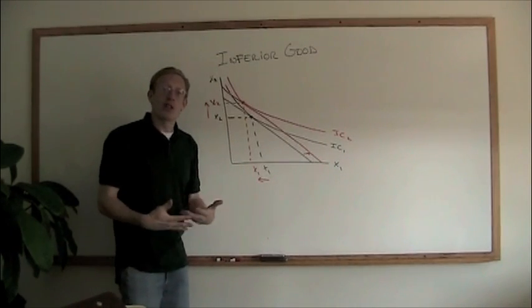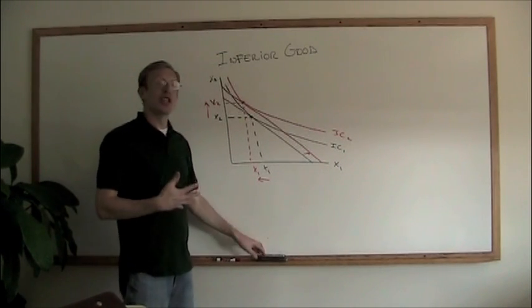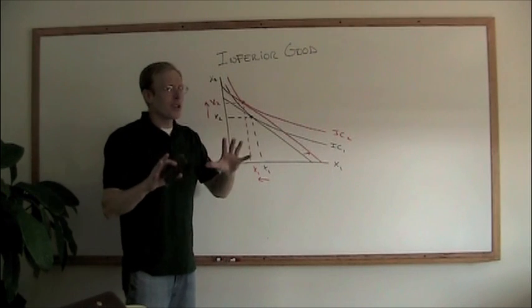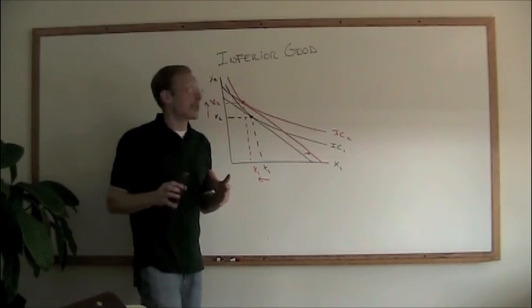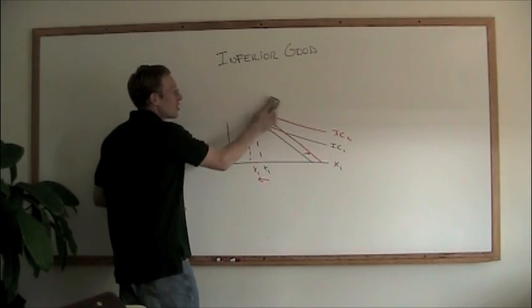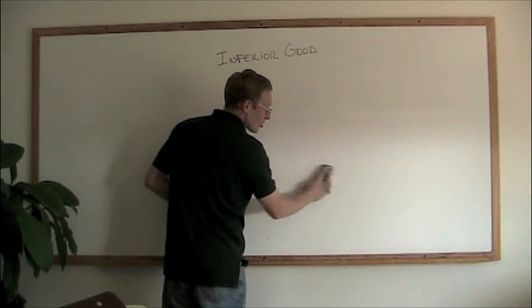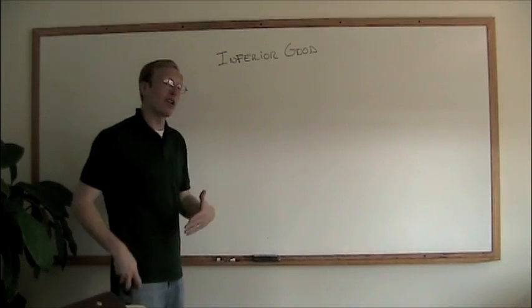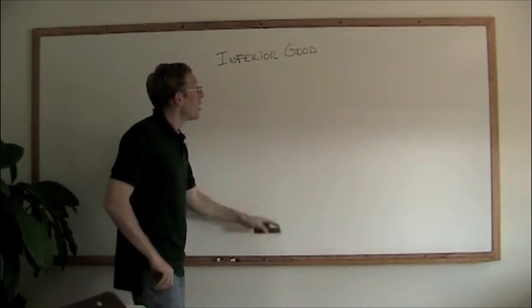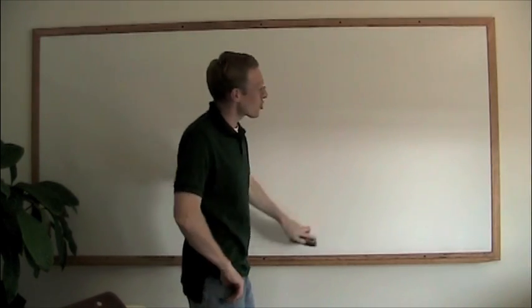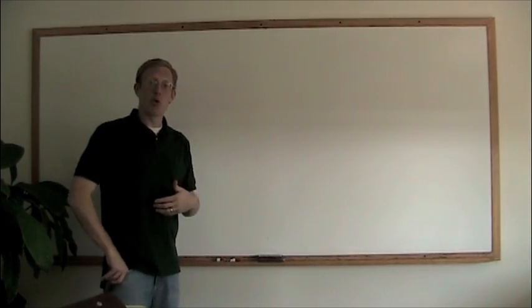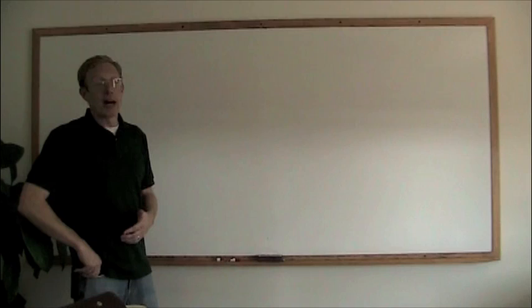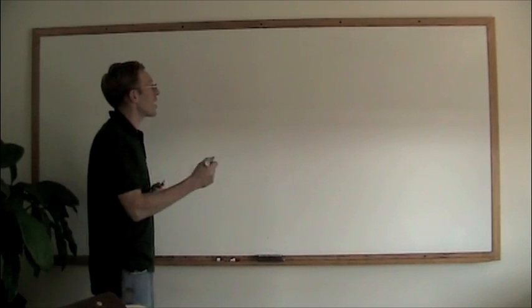Now, those are the two conditions that we face when we have a change in income. But things are different when we have a change in price. When we have a change in price, the budget constraint doesn't shift out parallel to itself. Instead, what we see is that the budget constraint is going to be fixed at a single point, depending upon which good is having the price change.